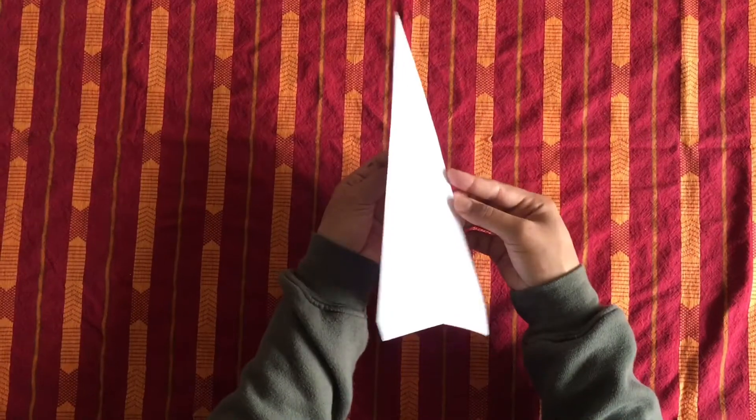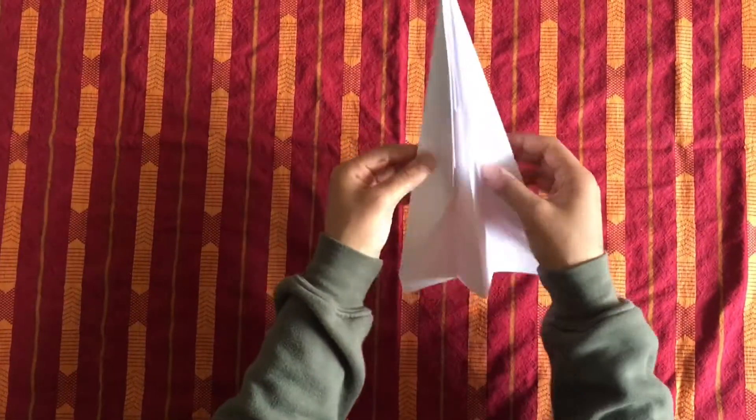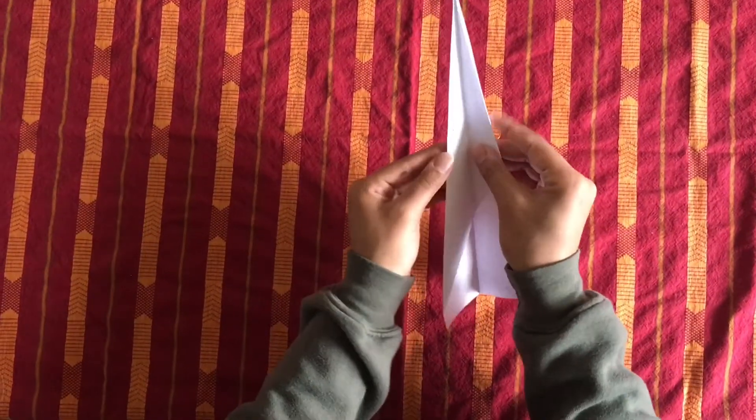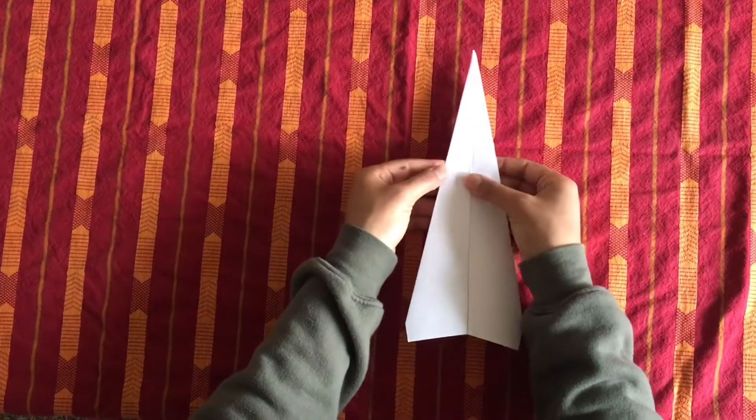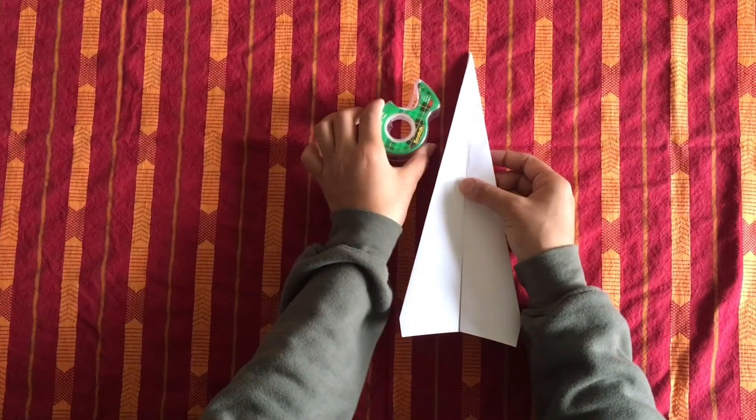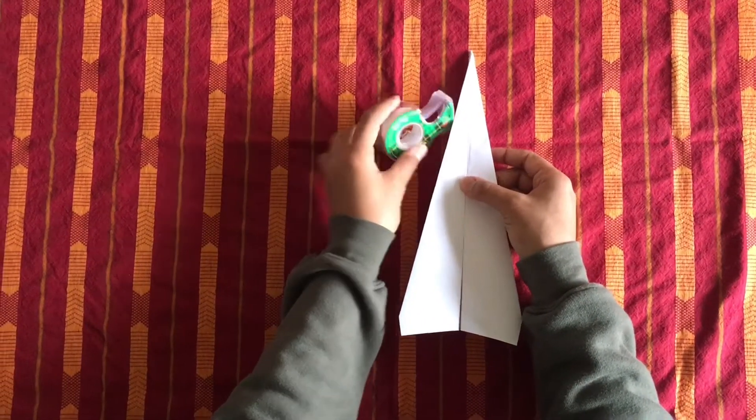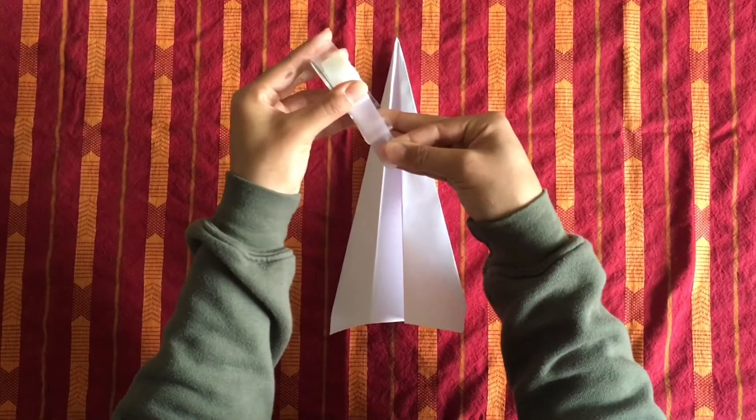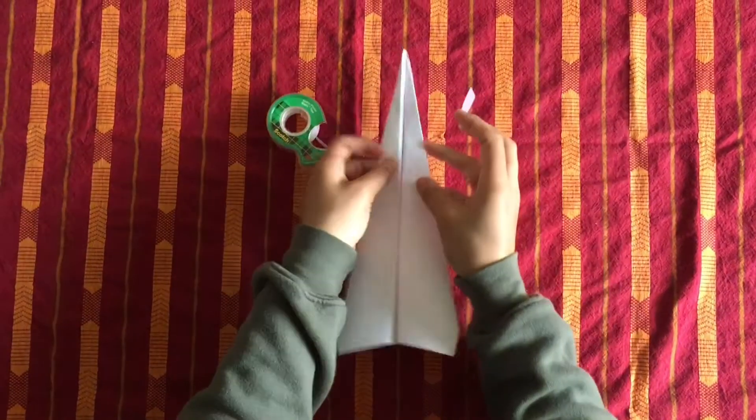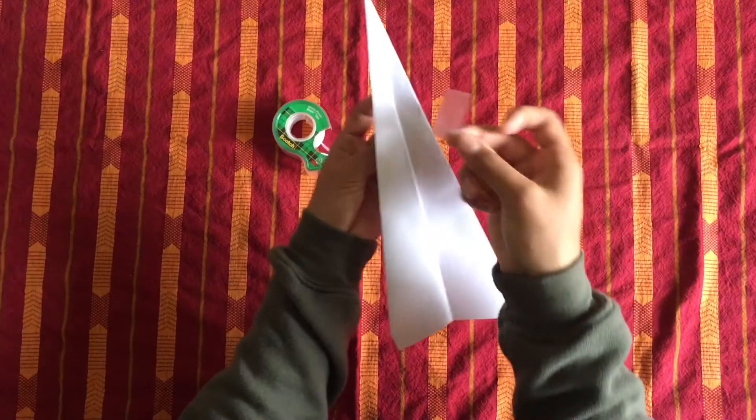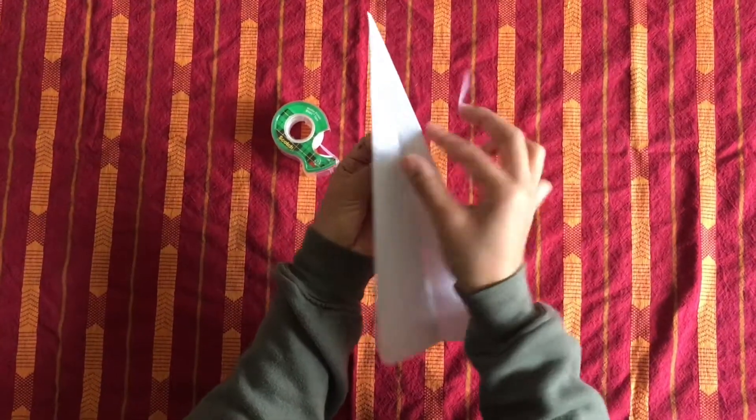So now that you have your airplane, if you notice it keeps kind of falling apart when you are throwing it, a nice handy trick is some tape. Take a little piece of tape. You don't need a lot. You can tape the front if you don't want your wings to come apart.